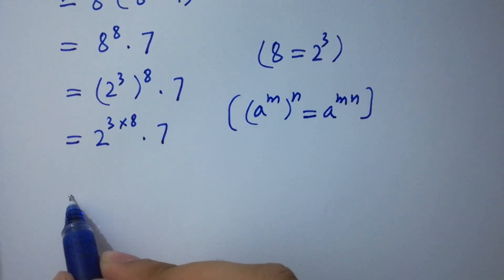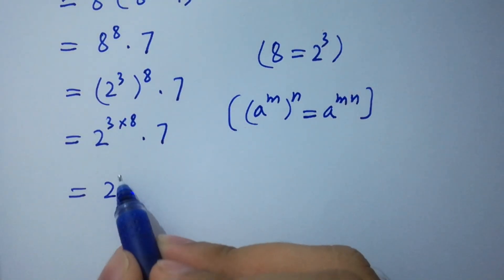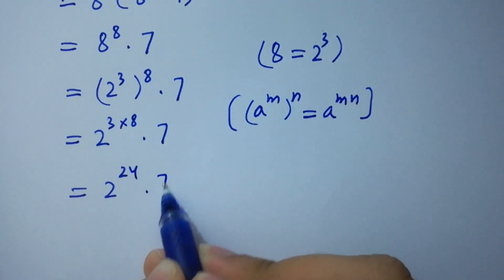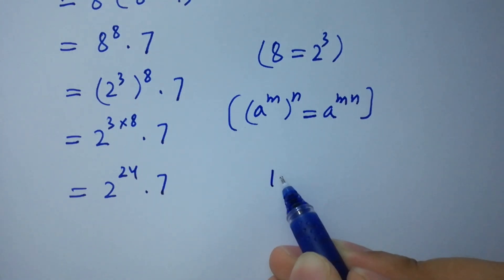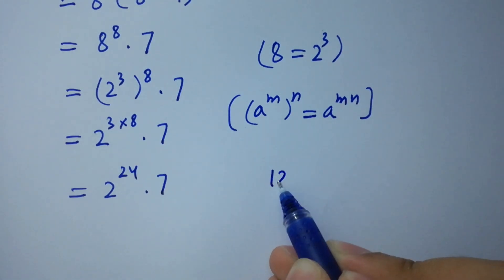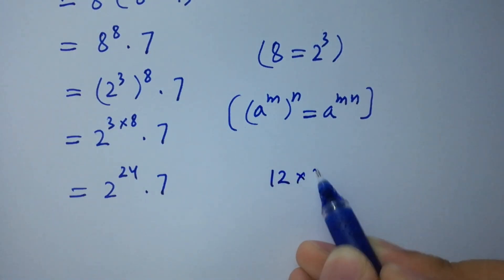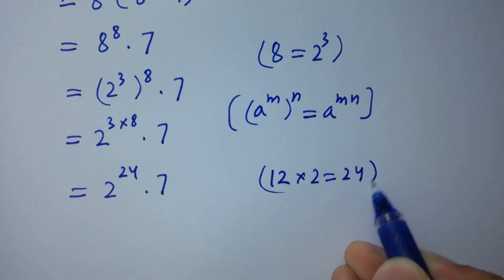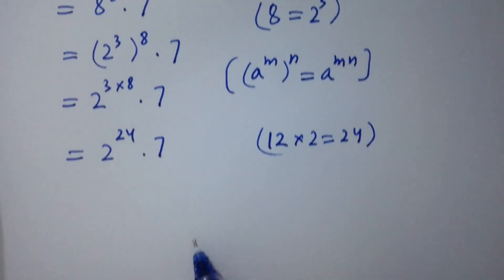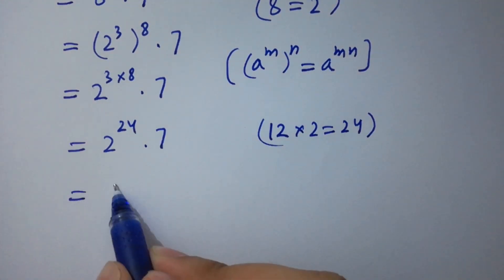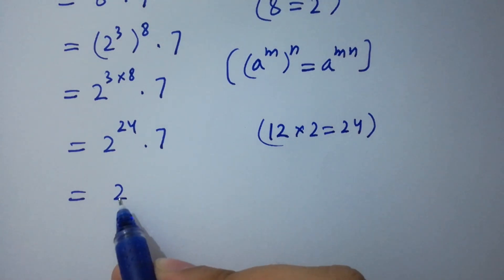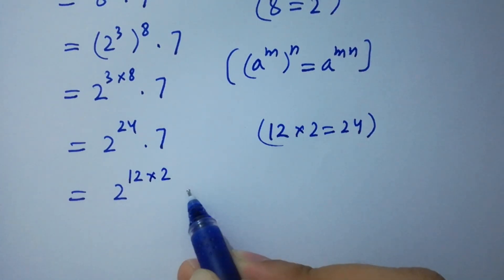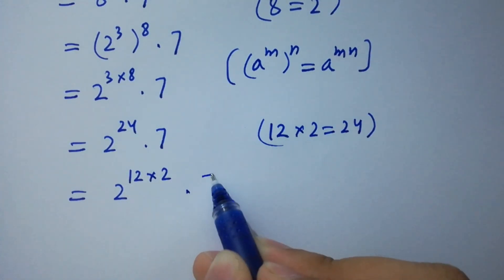2 to the power 3 times 8 is 24, times 7. So it will be 2 to the power 24 times 7.